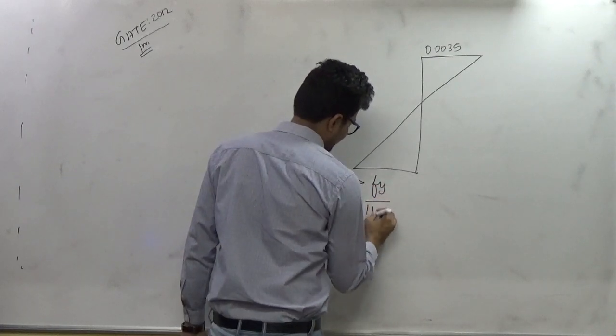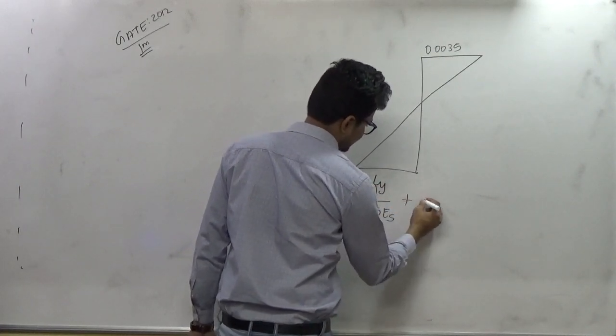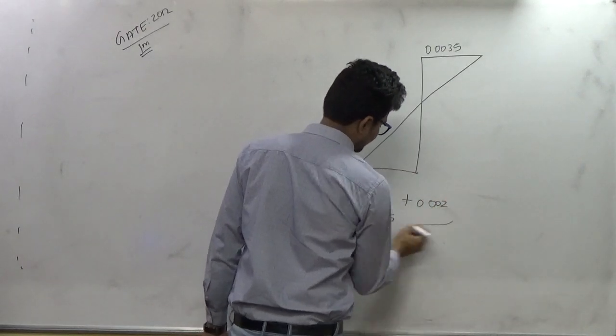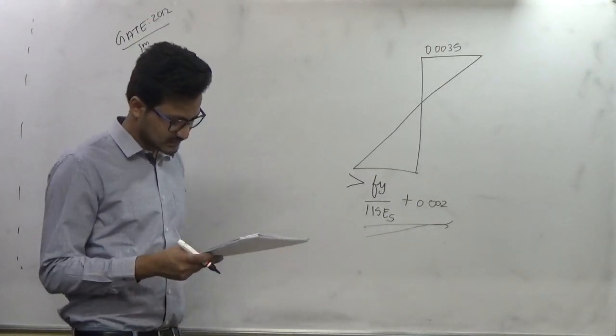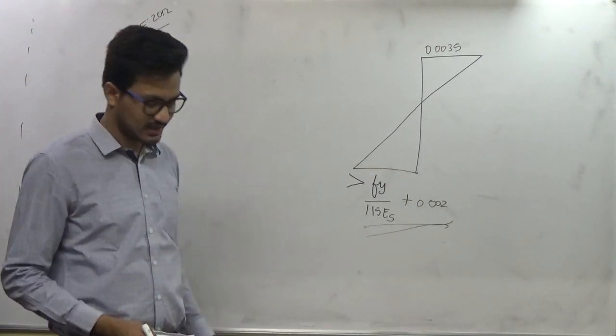FY upon 1.15 times ES plus 0.002. So this much strain has to be there during the time of failure. Therefore, option D is the right answer.